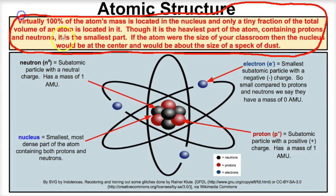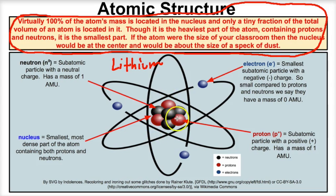If we take a look at this picture of this atom, we can tell that this is a lithium atom because there are three protons, and it's the number of protons in the nucleus that determine the element or atom that it is.